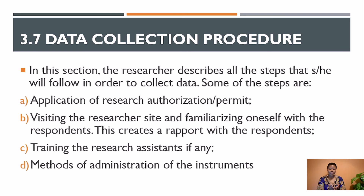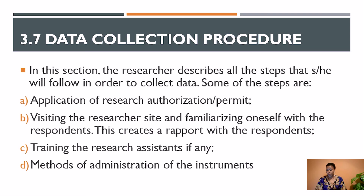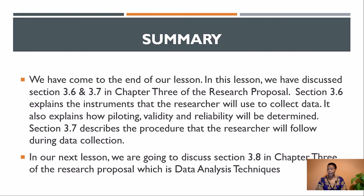Once you have identified methods of determining validity and reliability, the next section is 3.7: Data Collection Procedure. This is where the researcher explains all the steps they will follow when going to the field to collect data. These include application for authorization and permits, visiting the site before the actual study to create rapport with respondents and familiarize yourself with the area, and if you have research assistants, explaining when and how you will train them and how you will administer the instruments.